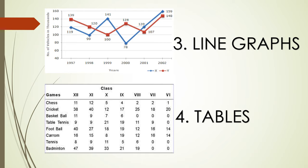Now the fourth type is tables. In this type, we take a table. On one side I have taken games and on the next side I have taken classes. So we will compare how many students of which class have opted for which game.